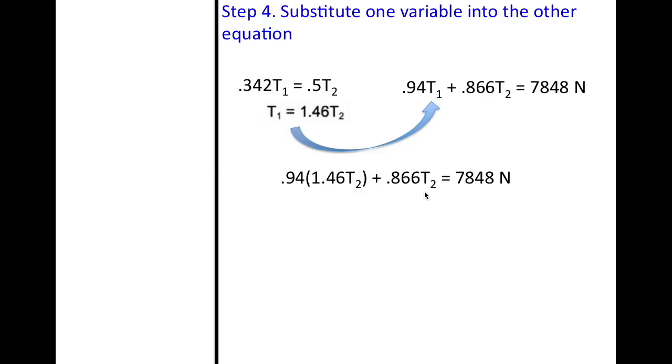Here is what I have. And when you solve for this, you should get 1.37t2 after multiplying plus the same thing, the 0.866t2 equals 7,848 newtons. And keep solving, keep solving, and eventually you will get t2. The tension in rope 2 will be 3,297 newtons. Yay!